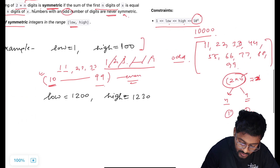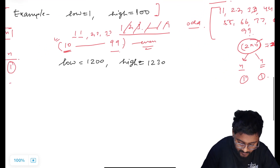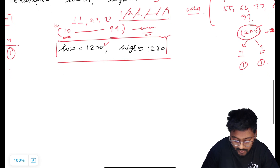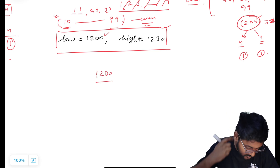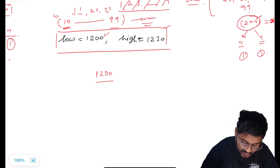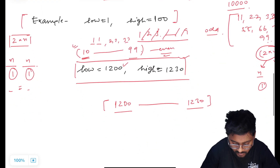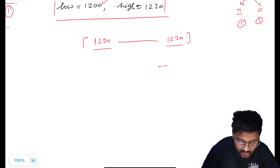The first example has an answer equal to 9. Now looking at the second example, which has a range from 1200 to 1230. Here 1200 is a 4-digit even number, so we can find symmetric numbers inside this range from 1200 to 1230. Both are 4-digit numbers, and in this range both have the left portion equal to 12.